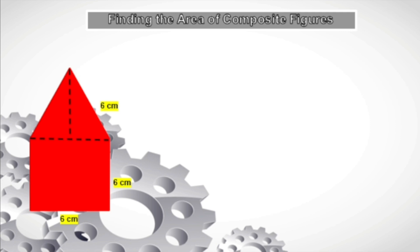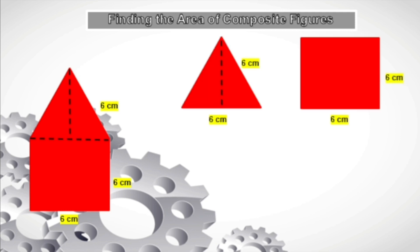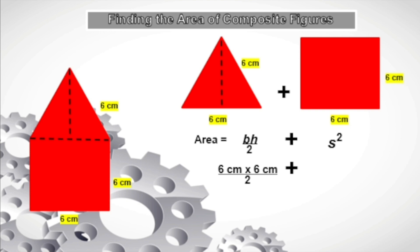Let us have another example for deeper understanding. Let us try to find the area of this figure. Again, we need to separate or divide this into two different shapes: we have a triangle and a square. To find the area of a triangle we use base times height divided by 2. For the area of a square we use side squared. The base is 6 centimeters and the height of the triangle is 6 centimeters, so we have 6 centimeters times 6 centimeters divided by 2. For the area of the square we have 6 centimeters times 6 centimeters.